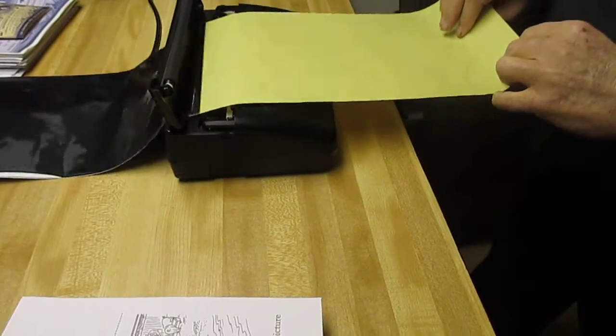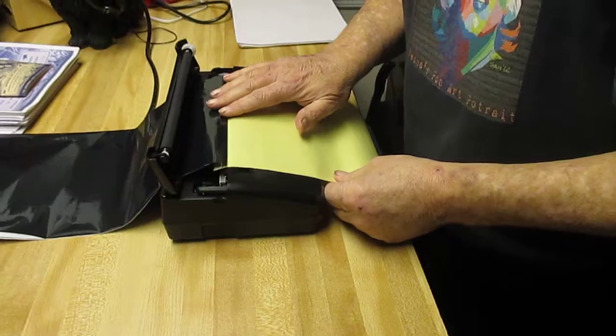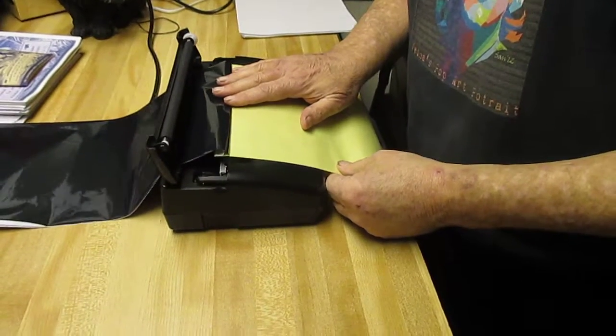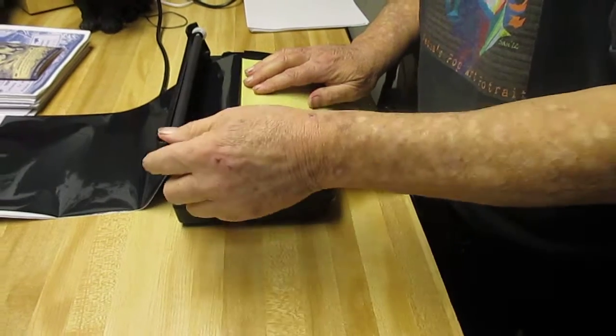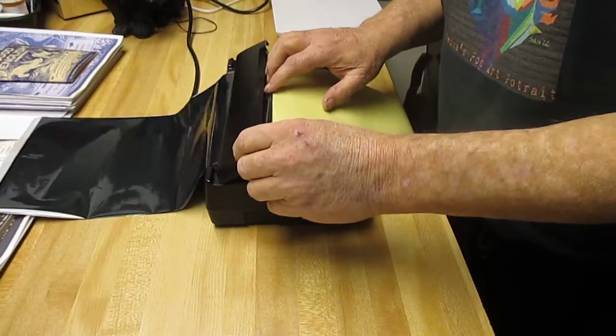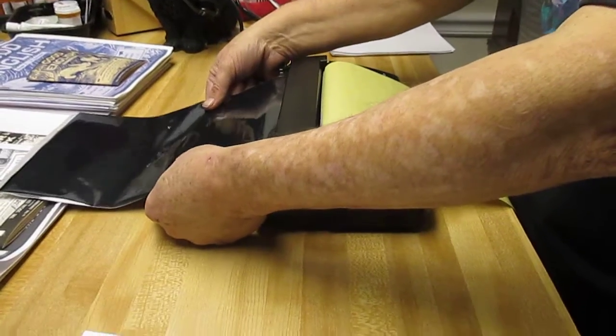You pull it all the way through until it comes to the top of the master. I use legal masters because many times I don't place the stencil right and it will cut it off and I don't like that, and I like the long sheet.